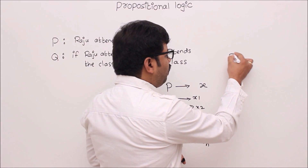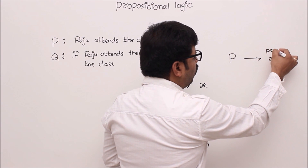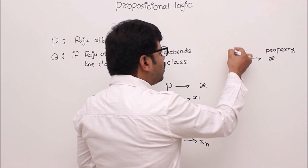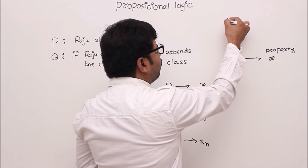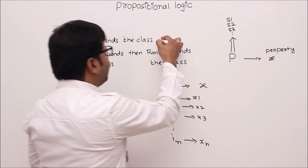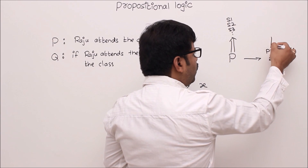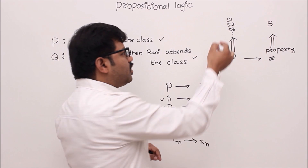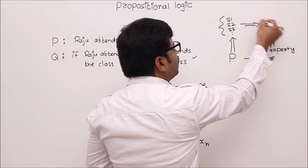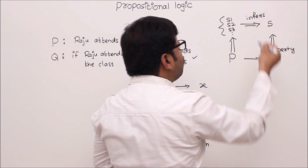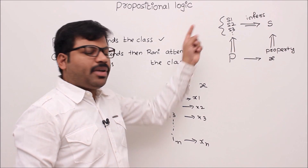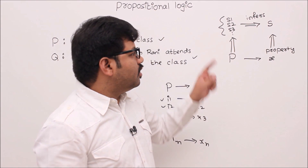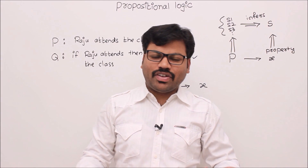For example, you have a program P whose output is x, and you say x is a property this program should have. Convert this program to a set of mathematical statements s1, s2, s3, and also convert the desired property as another statement s. If you can prove — using mathematics and logic — that this set of statements always infers the property s, then you can say the program is proved mathematically using propositional logic. That is an application of propositional logic.